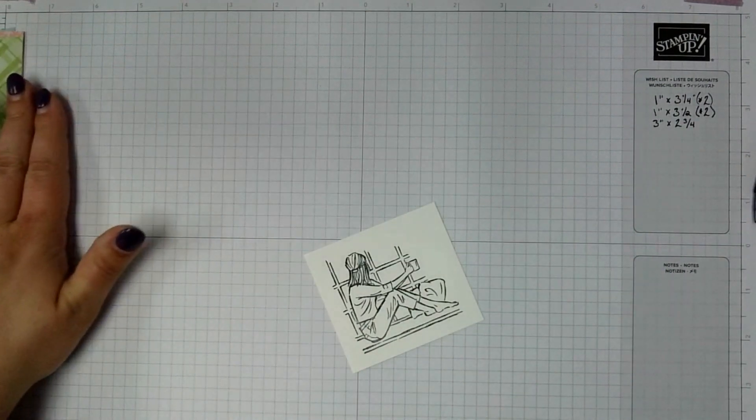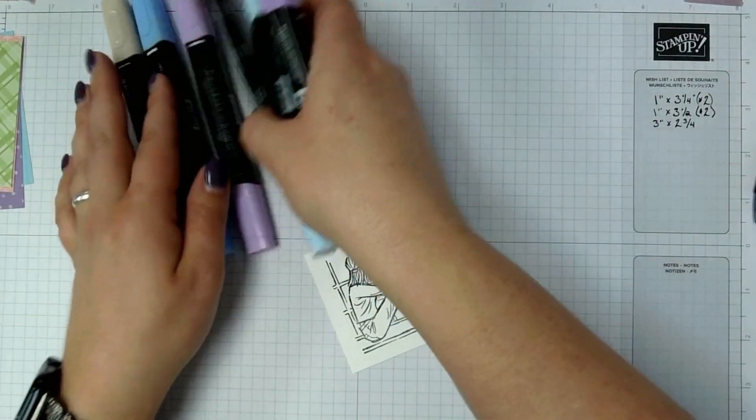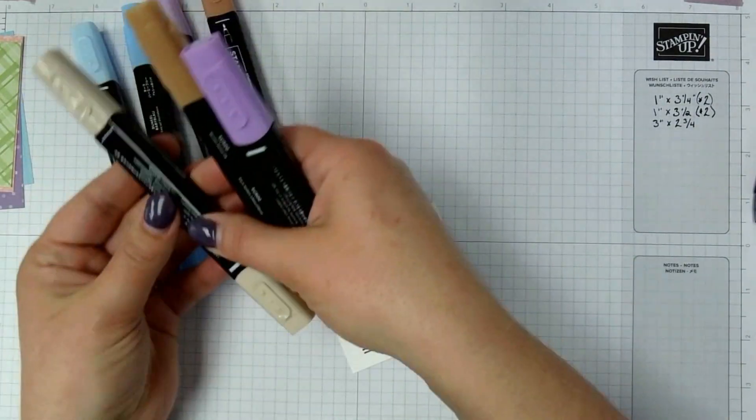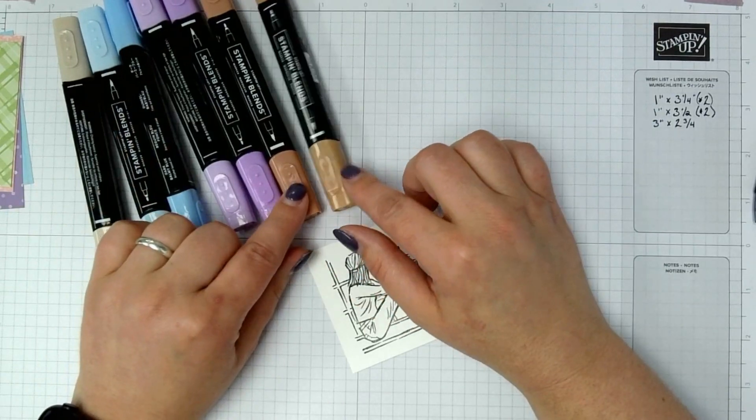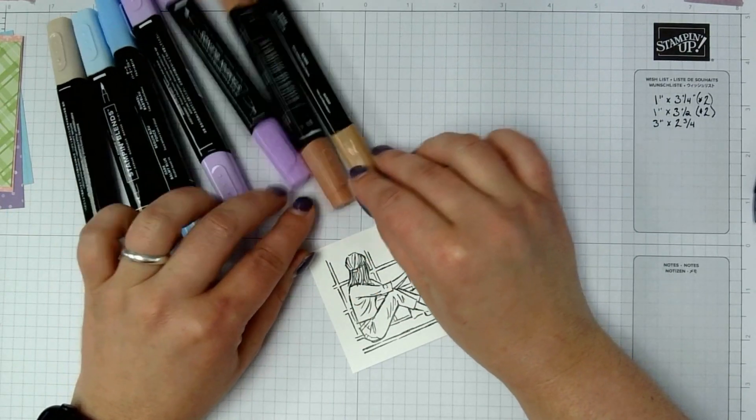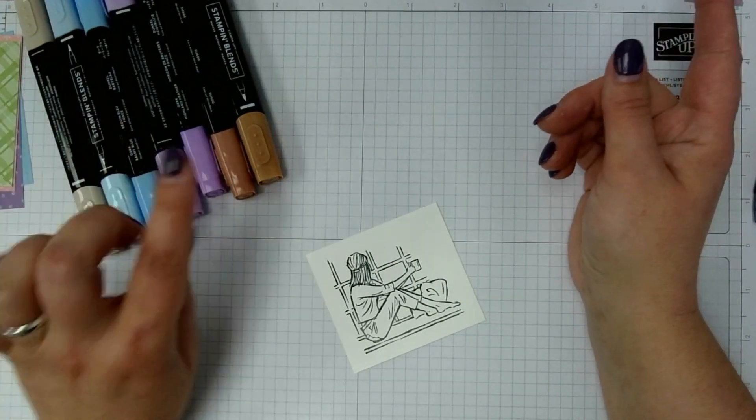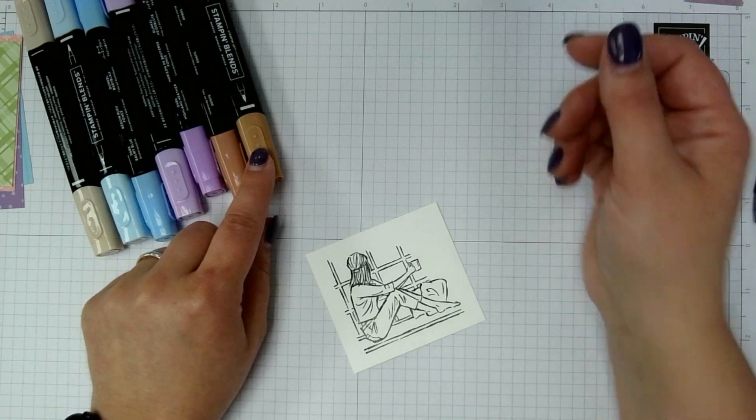Okay, so I'm going to use my Stampin' Blends to color this image. I have Balmy Blue, I have Ivory, I have Highland Heather, and I have that Medium Neutral combo. And the numbers on the Medium Neutral are SU-600 and SU-500.